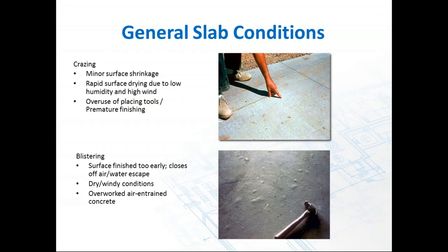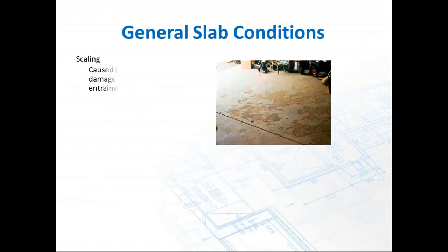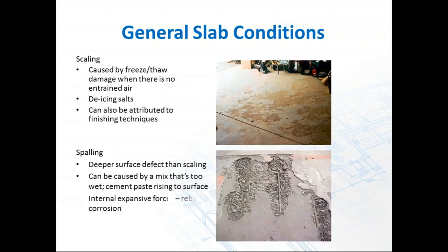What can cause general slab condition problems? There's a thing called crazing — minor surface shrinkage due to low humidity and high winds, also caused by overuse of placing tools and premature finishing. It looks like alligator skin on the surface, and you can't direct bond to it. Blistering occurs when the surface is finished too early — you trap air and water inside and bring all the cream up to the top. Dry, windy conditions dry the top of the slab before the middle, like drying the outside of a cake before the inside.